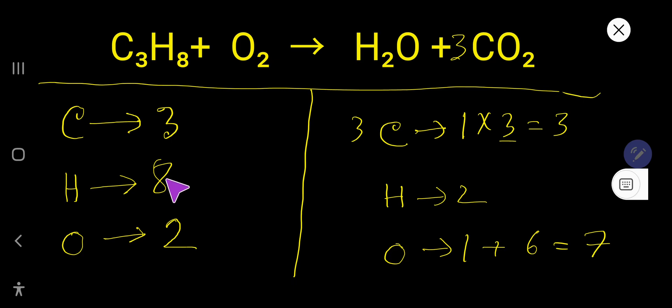Now, balance hydrogen. Here 8, here 2. So simply multiply here 4, that gives you 8. This 4 must come before this atom, and this hydrogen has come from here, so place here 4.